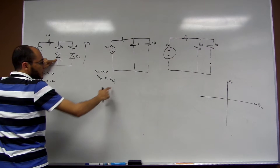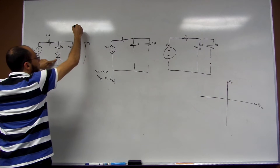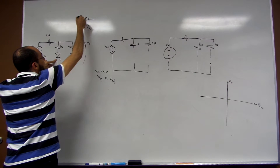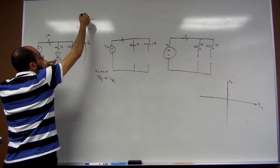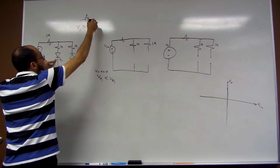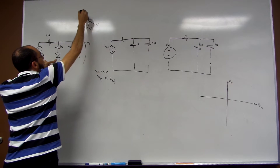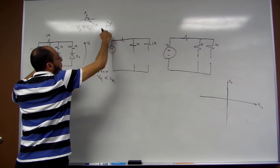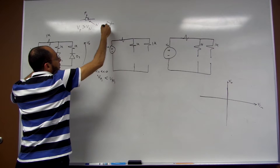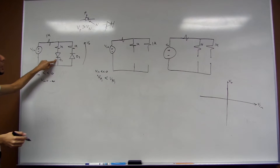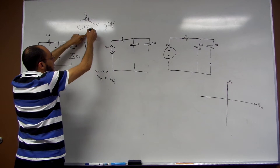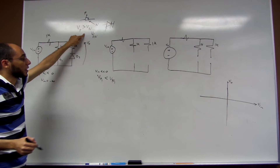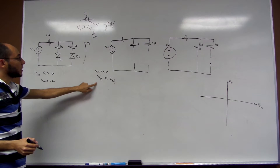For any diode, it is ON when VP is greater than VN — that is the P-terminal and that is the N-terminal. Since VP1 is smaller than VN1, this condition does not hold, and I can guarantee that diode D1 is OFF.